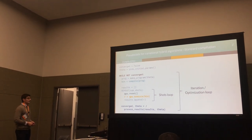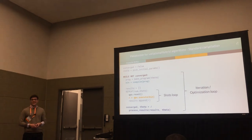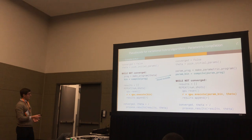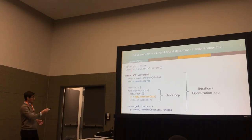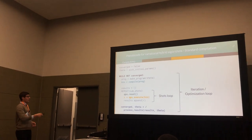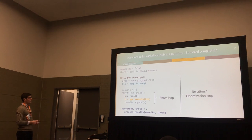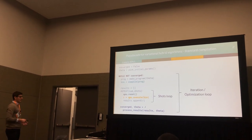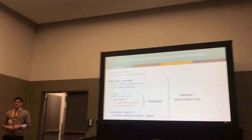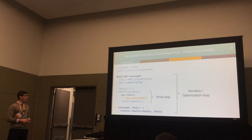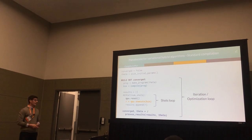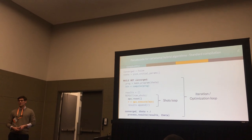Here we have pseudocode for a typical variational hybrid algorithm using standard compilation techniques. We begin by choosing our initial parameters, then enter into an optimization loop where for each step we make our program as a function of theta, compile it to a binary, and then run that binary many, many times on the QPU. For each repetition or shot, we reset our QPU at the beginning of that shot. Once we finish executing, we collect our results and decide if we've found a solution. If not, we choose theta for our following round of optimization.